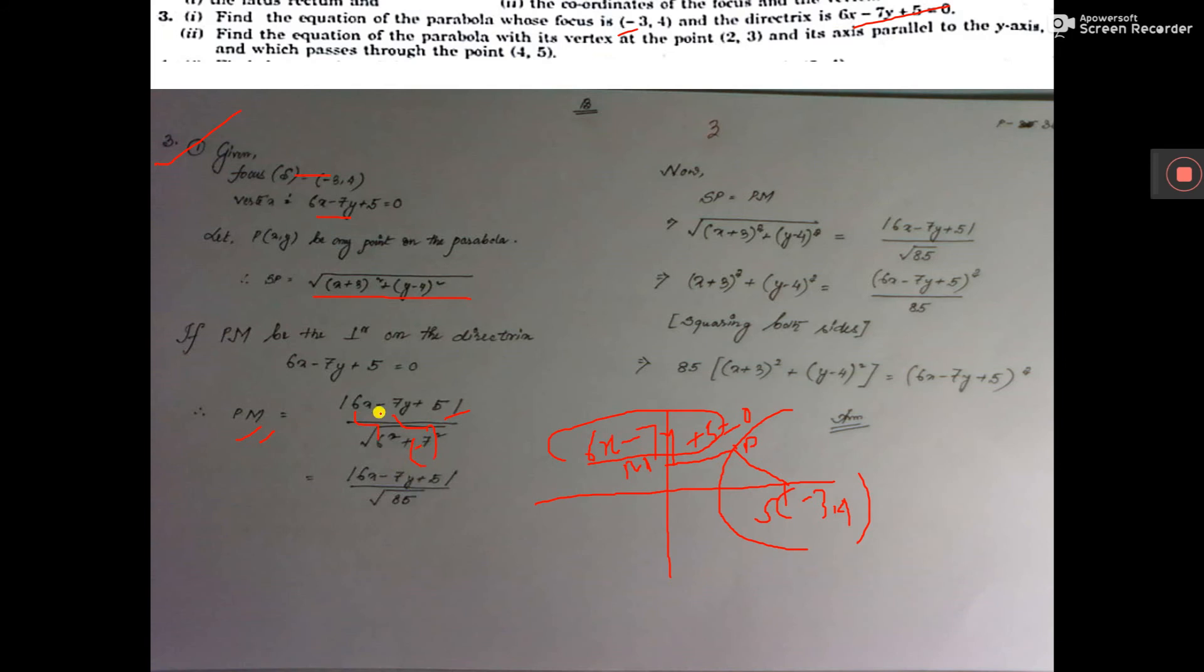Remember, you have to take (-7)². Now apply sp = pm because this is the property of the parabola. Put the values and get the answer.